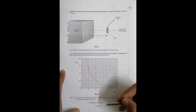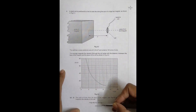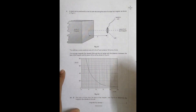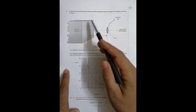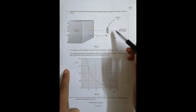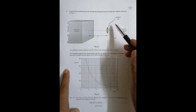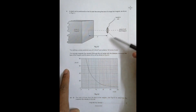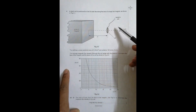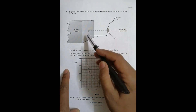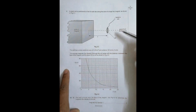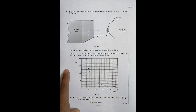Hello friends. This is the 2014 October/November Paper 4, question number 4, concerned with the chapter on electromagnetic induction. It says that a small coil is positioned so that its axis lies along the axis of a large bar magnet. So the axis of the bar magnet and the coil's axis are both along the same line.